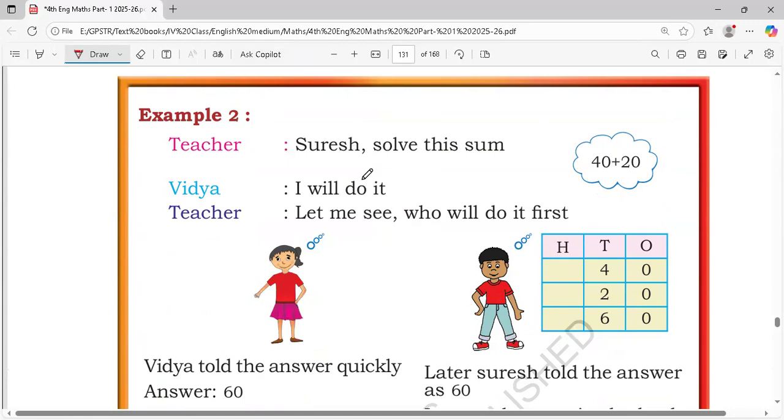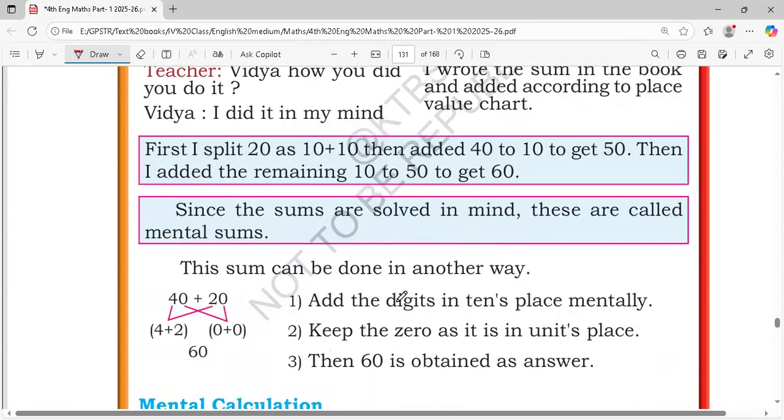Example two. Suresh, solve this sum. Teacher, let me see who will do it first. Problem is 40 plus 20. Just add 40 plus 20, this is 60. See how to do Mental Arithmetic. First, I split 20 as 10 plus 10. Then added 40 to 10 to get 50. Then added the remaining 10 to 50 to get 60. Since the sums are solved in mind, these are called Mental sums.